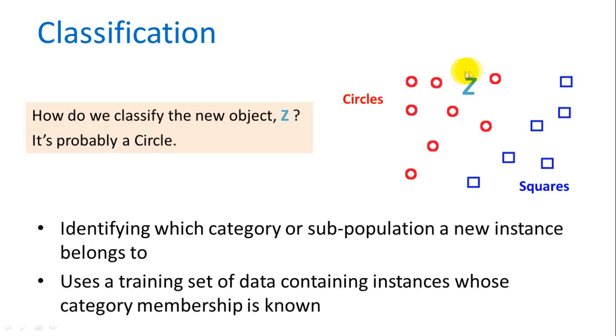Well, since it's most similar to the circles, we say z is probably a circle. So we're trying to identify what category or population a new instance belongs to. And we use that training data to figure out which ones it's most similar to, to identify or guess the type of a new object.